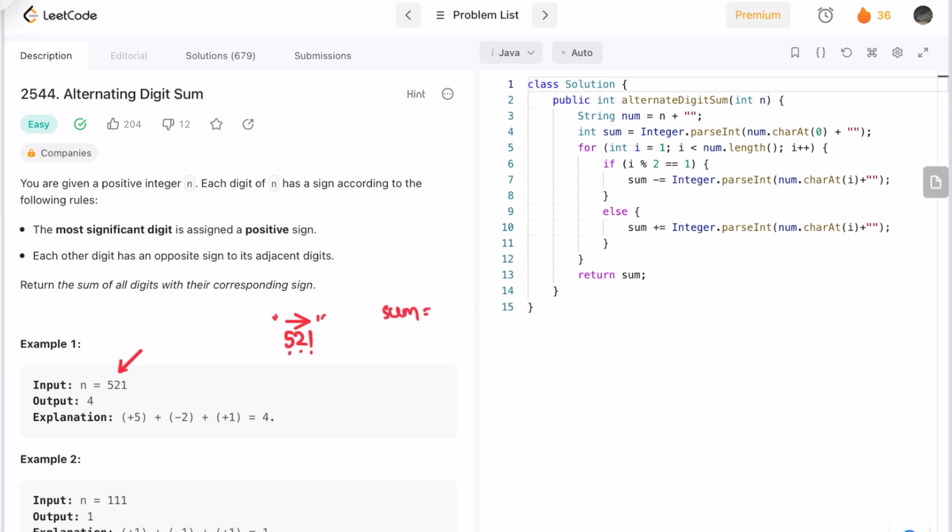Initialize it to the first digit because the first digit will start from positive. Since the first digit is positive, you can directly assign it instead of assigning sum as 0 and then adding the first digit. You can directly add the first digit into the variable sum. This is index 0, 1, 2.